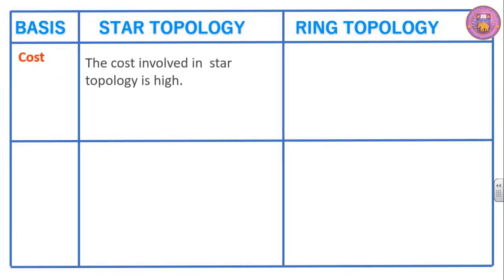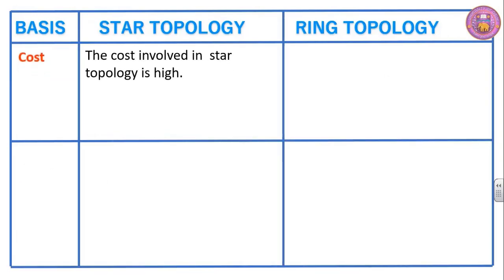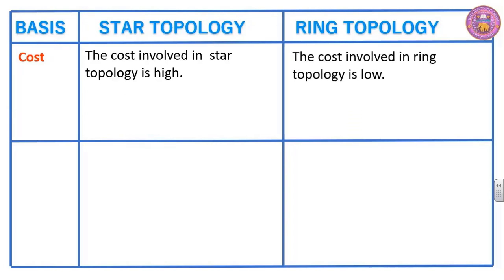Cost. The cost involved in star topology is high, whereas in ring topology the cost involved is low.